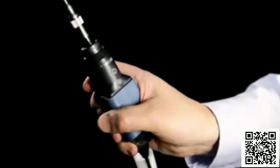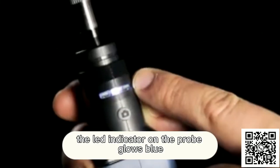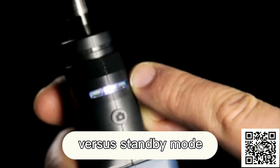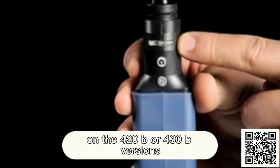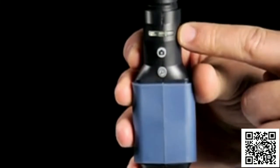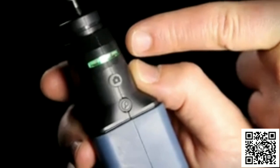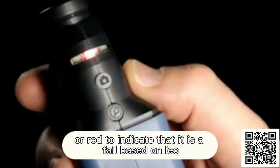The LED indicator on the probe glows blue and blinks to indicate testing status activity versus standby mode. On the 420B or 430B versions, with onboard end face analysis, the LED will turn green to indicate that the connector is a pass, or red to indicate that it is a fail based on IEC standards.